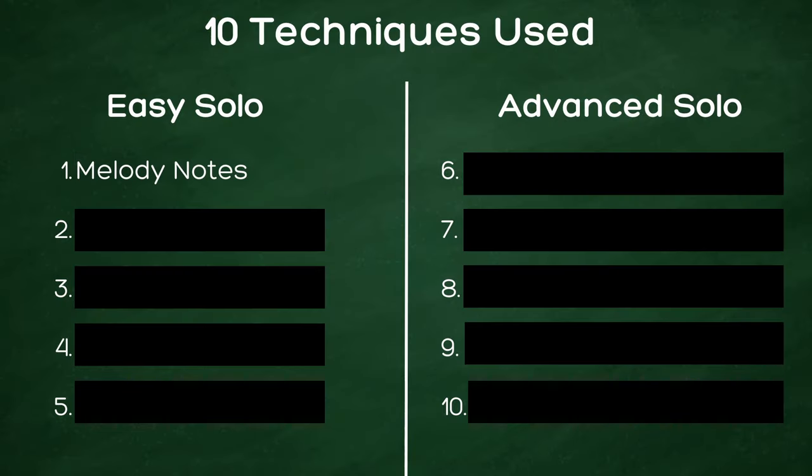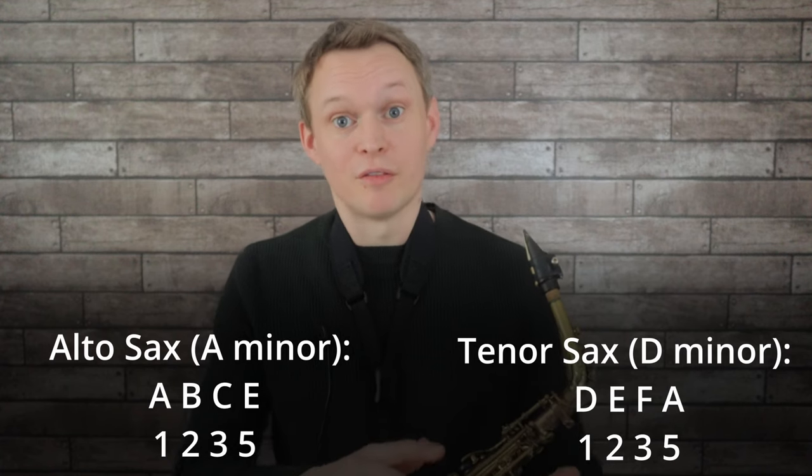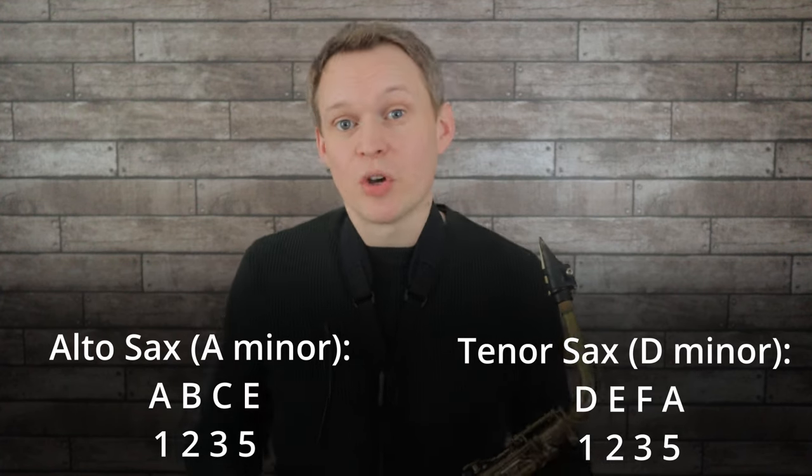The first thing we're going to use is take the notes that the melody is made up from. For the first few phrases of the melody of Moondance it uses the first, second, third and fifth note from the scale. So we're going to use those notes to improvise with to create our first couple of phrases. Check it out.